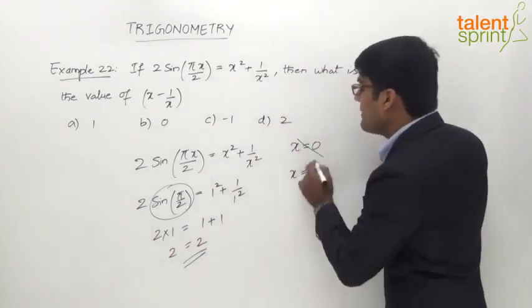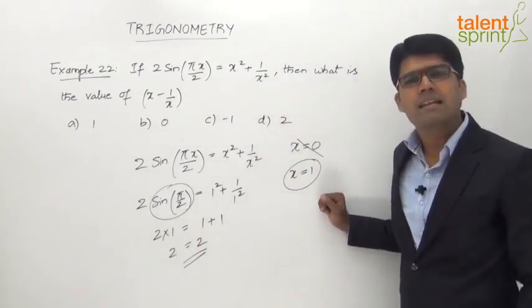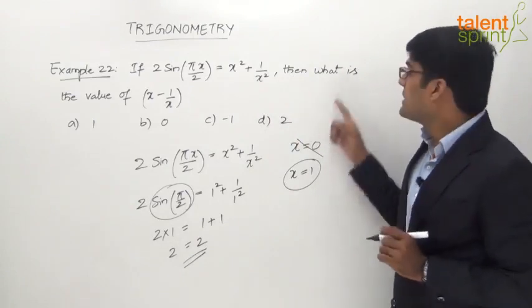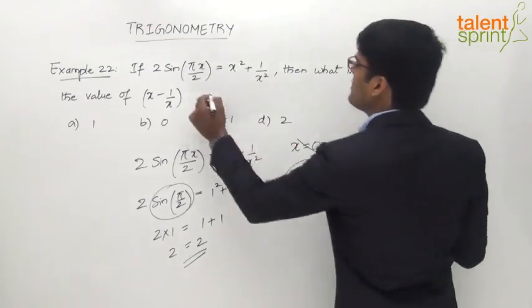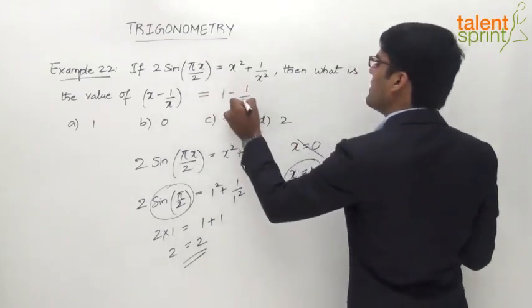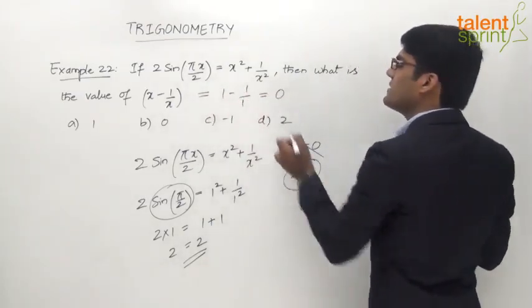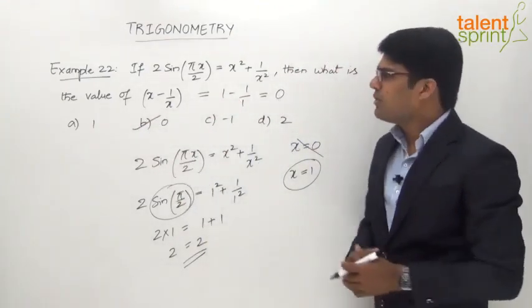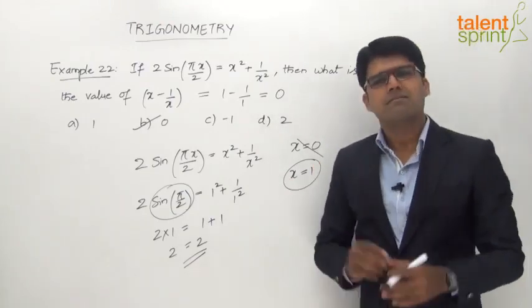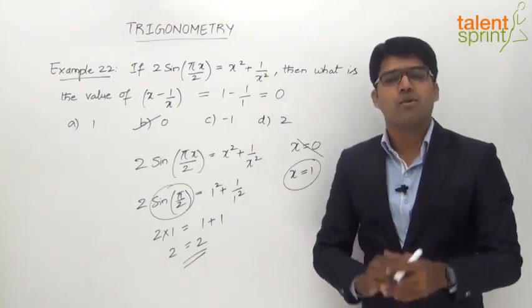So we get 2 = 2, which means the equation is satisfied when we take x = 1. So we can conclude that the value of x is 1. But the given question says what is the value of x - 1/x? Just substitute x = 1, so this will be 1 - 1/1, which is 0. So the answer for this question would be option B, 0.